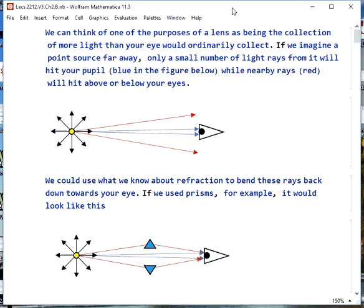One of the main purposes of a lens is to collect more light than your eye would ordinarily gather. If we imagine a point source far away, only a small number of light rays from it will actually hit your pupil. These are the blue rays in the figure below. While nearby rays, the red ones, will go above or below your eyes.